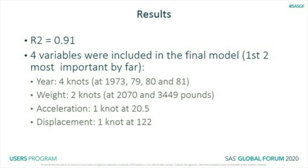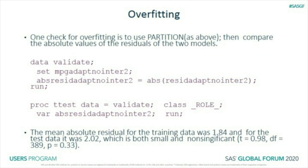We got an R-squared of 0.91 — very good. Four variables were included; the first two were by far the most important. Year had four knots, weight had two knots, acceleration had one knot, and displacement had one knot. Note that acceleration is reverse-coded: higher numbers mean slower acceleration (seconds to reach a certain speed). To check for overfitting, I looked at absolute values of residuals in training versus test sets — the mean absolute residual was 1.84 for training and 2.02 for test, a nonsignificant difference despite N of 389.